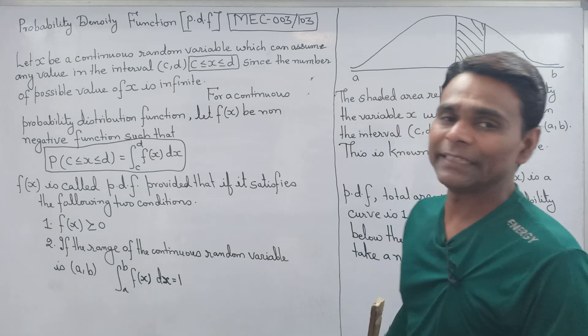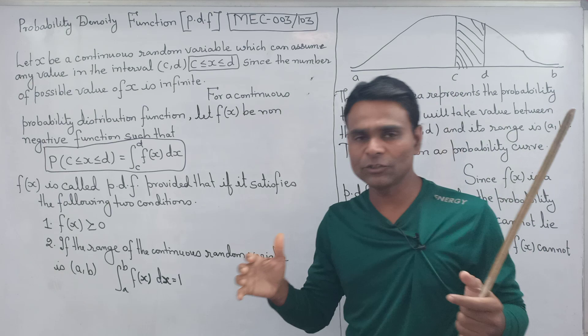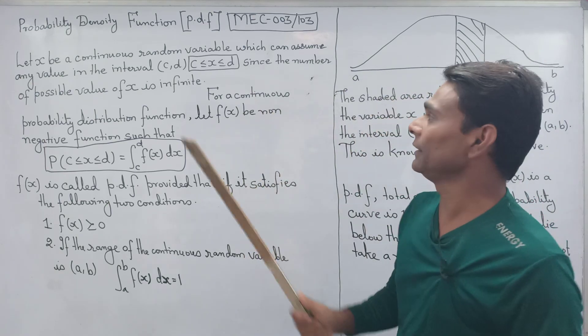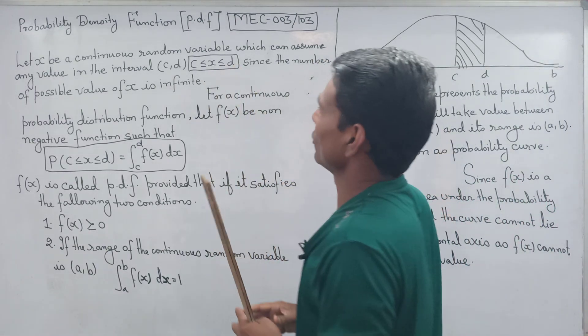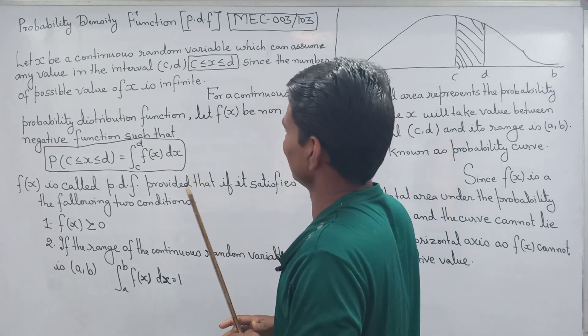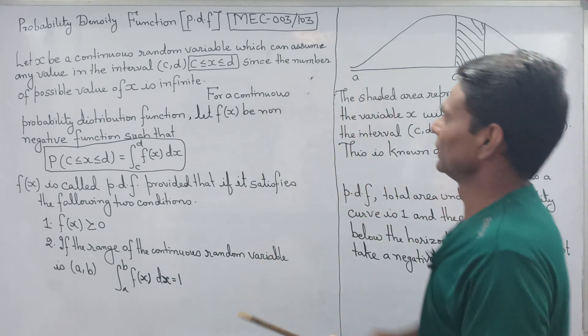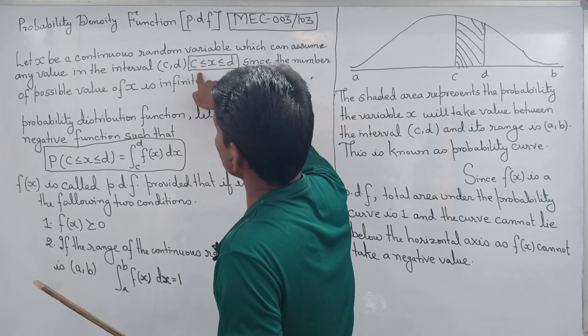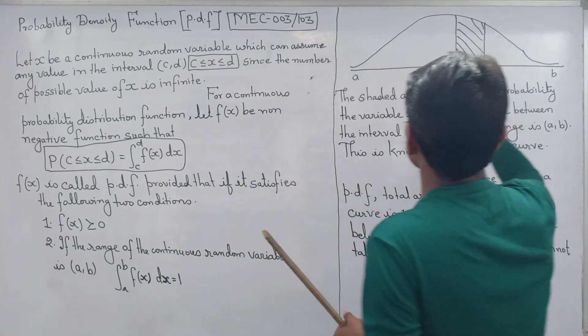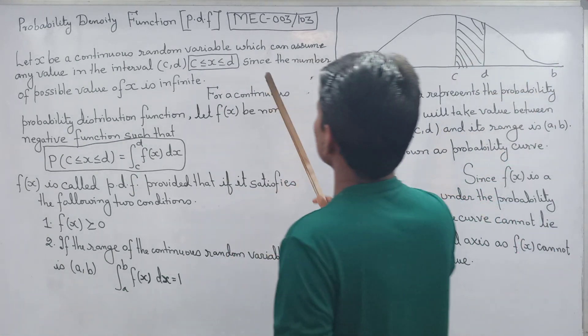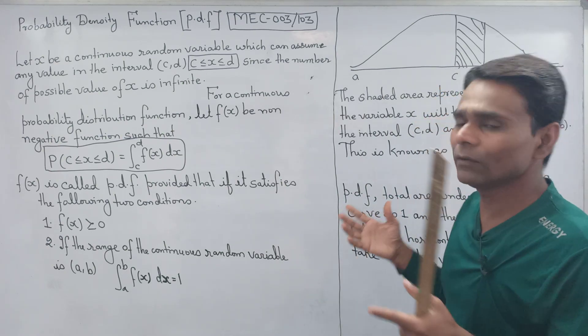Let X be a continuous random variable which can assume any value in the interval CD. You can see here, X is defined as a continuous random variable. It can assume any value in interval CD, where X is greater than or equal to C but less than or equal to D. This is the interval, the range.